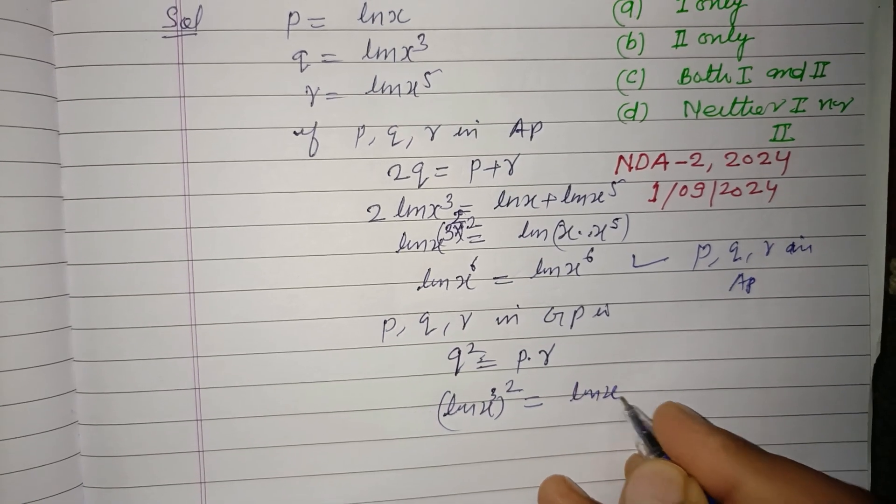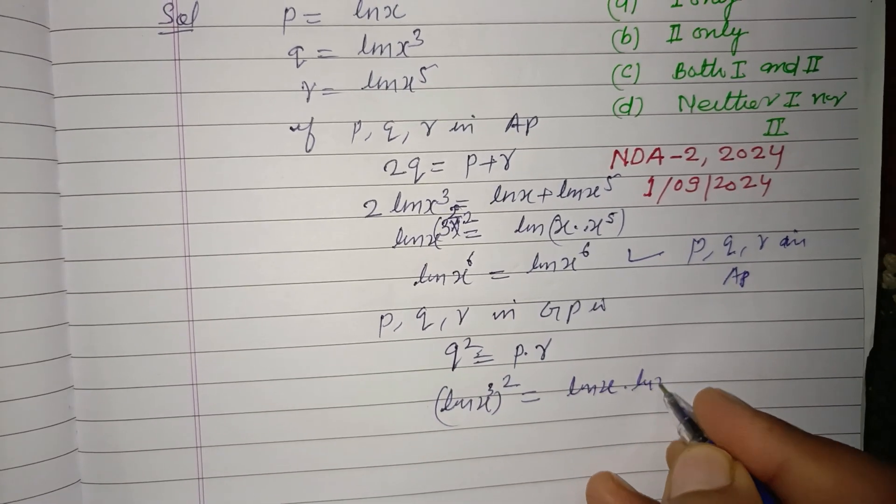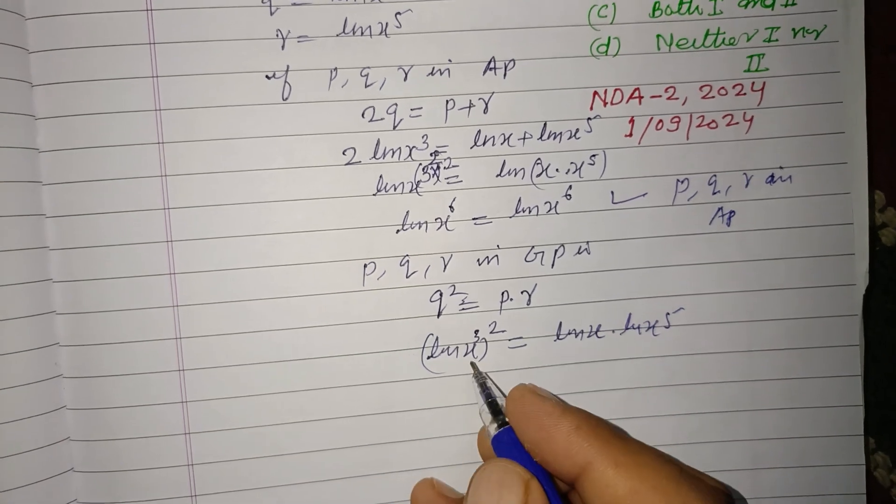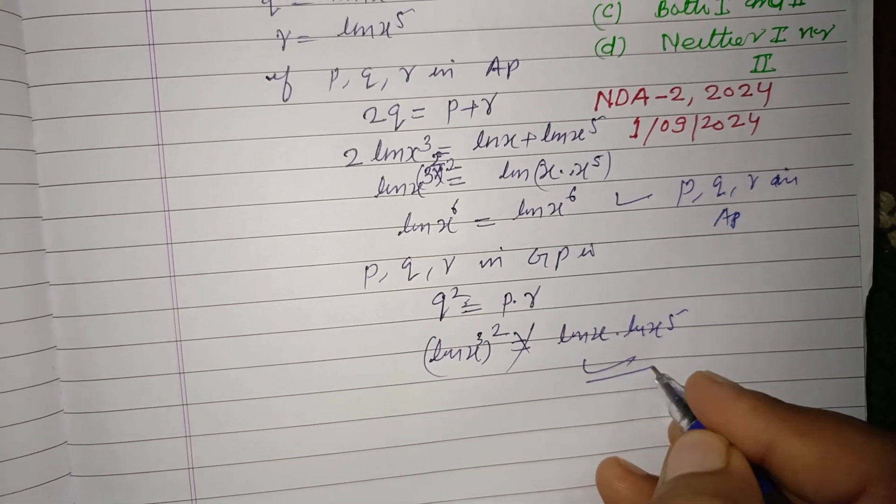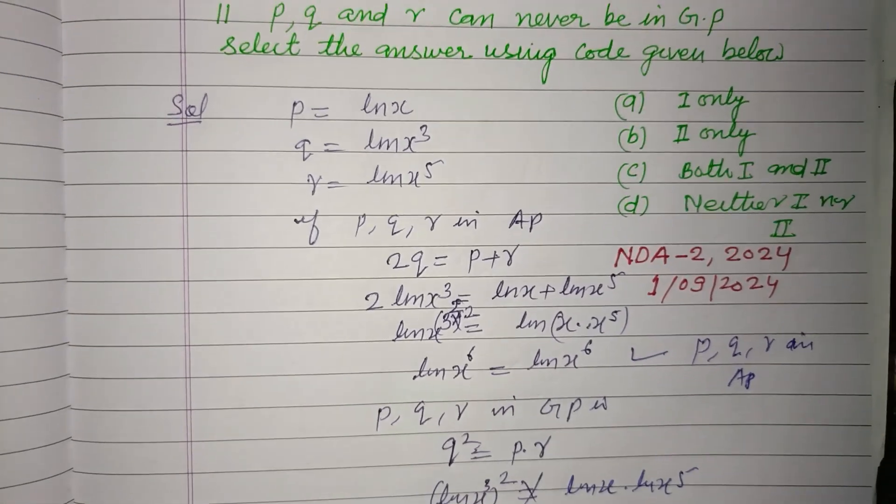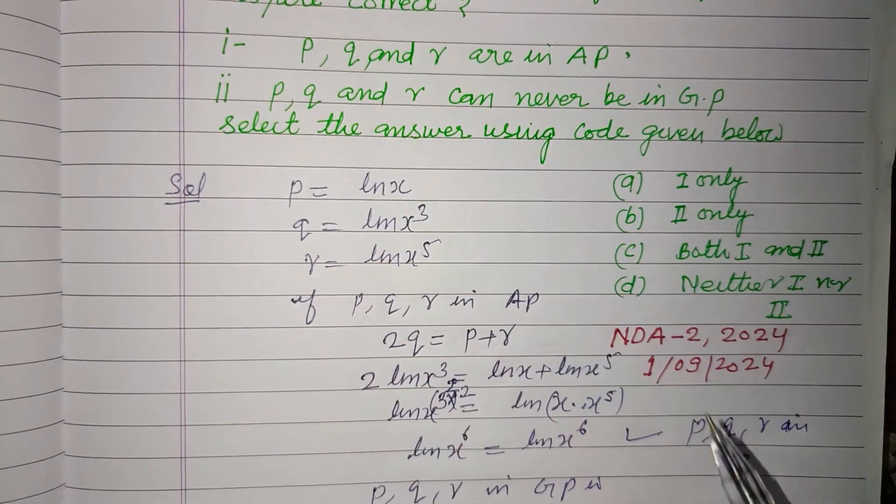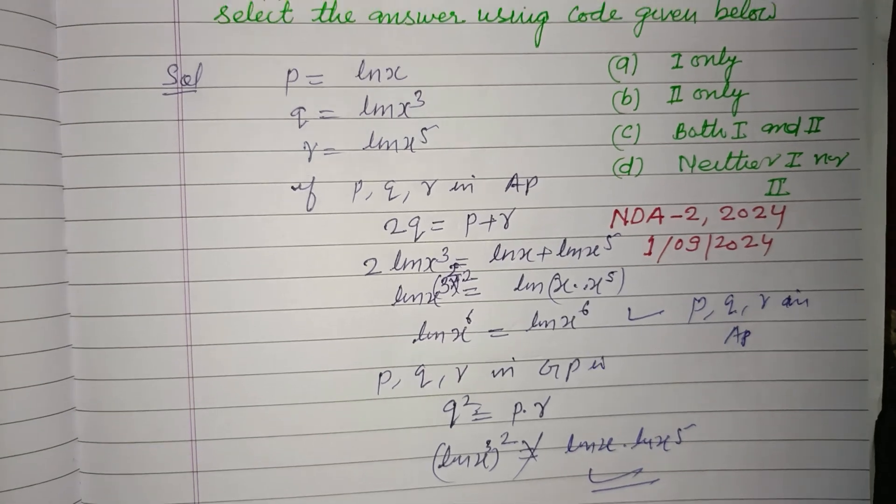p is ln(x) times ln(x⁵), that is not equal. So p, q, r cannot be in GP.